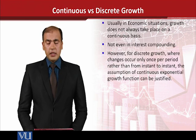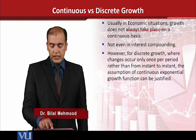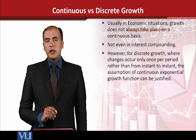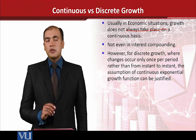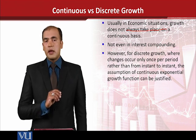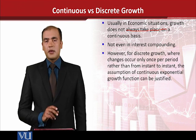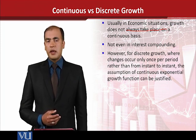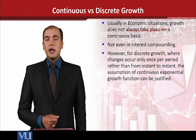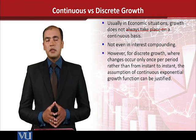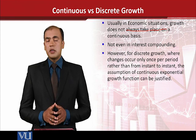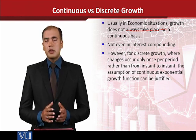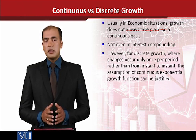Usually the economic situations do not have growth rates or variables on a continuous basis, as we assume in mathematics — that continuous variables adopt each and every value in the range. However, in economic situations this is not necessary. Even the case we often study with reference to continuous compounding, which is the case of interest compounding, is not purely of that nature — it might be discrete. But should we say that all variables exist in a discrete manner and we cannot use the continuous methodology? No. We can at least try to create equivalents, and if they become equivalent to each other, then we can use the methodology interchangeably.